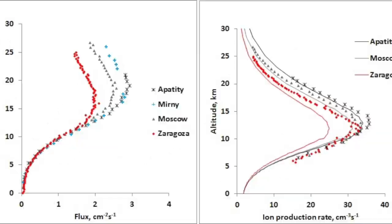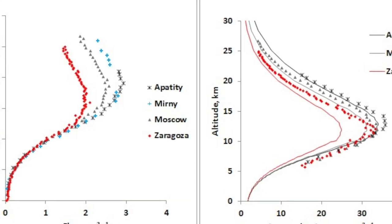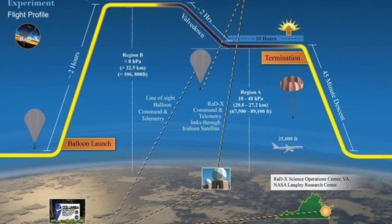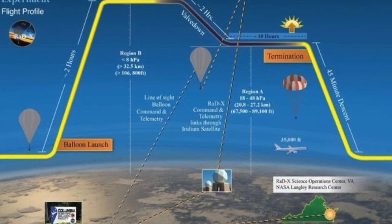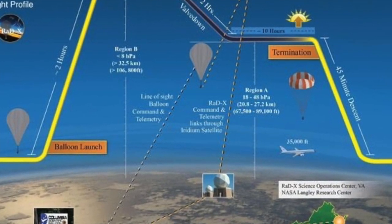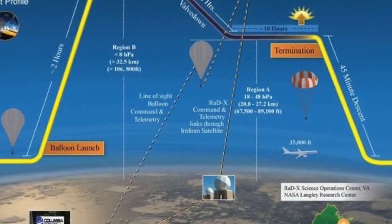The experimental results are similar at different places on Earth. Here I show the flight profile of NASA's RadX system. All results show that cosmic ray intensity decreases at high altitude as well as at sea level.